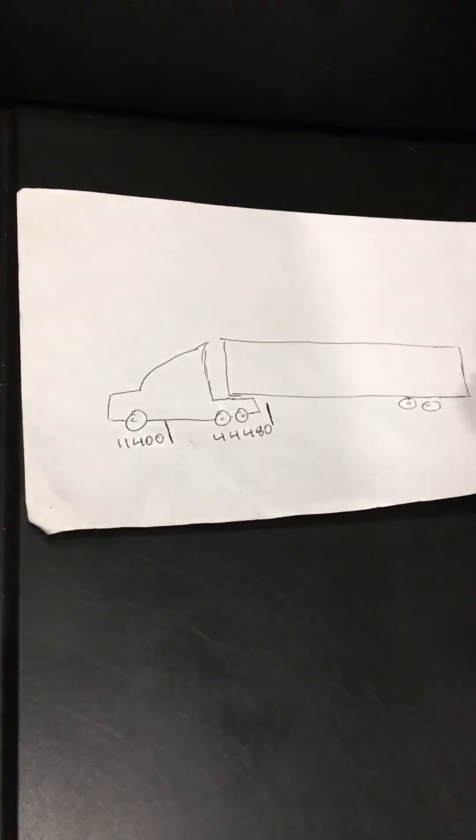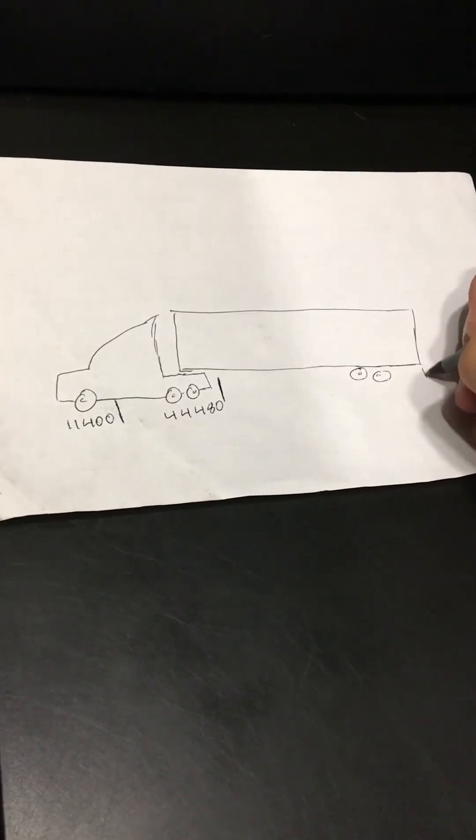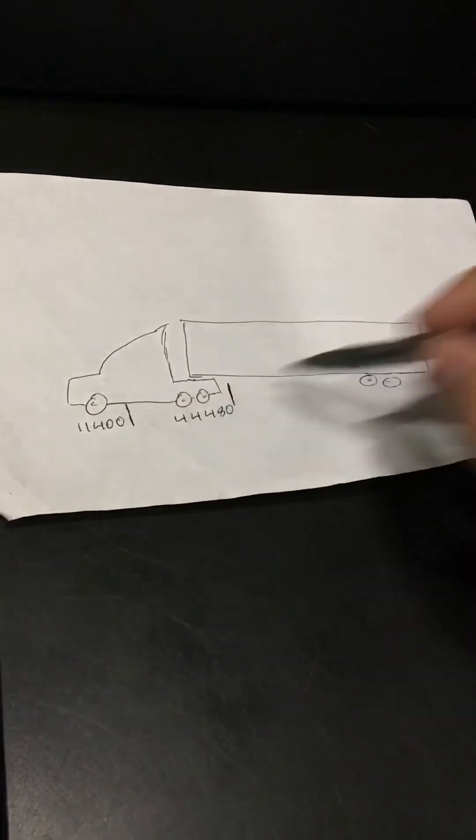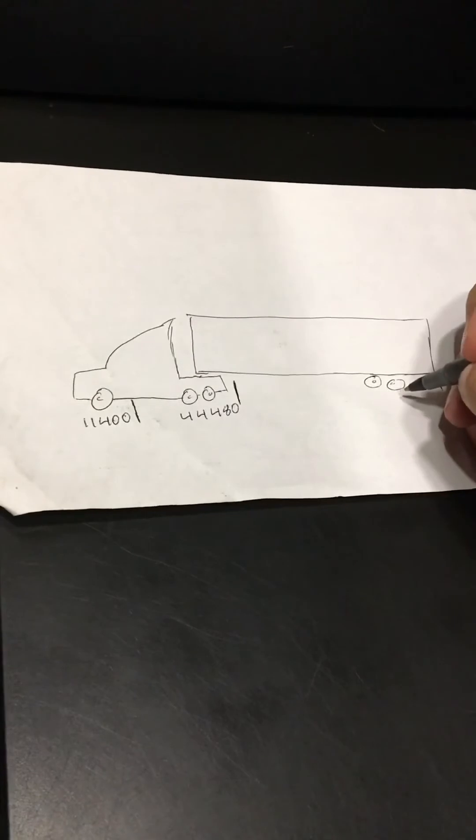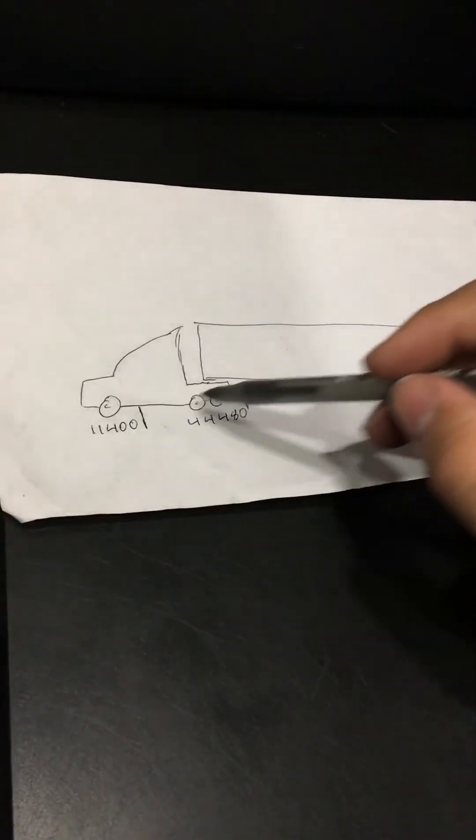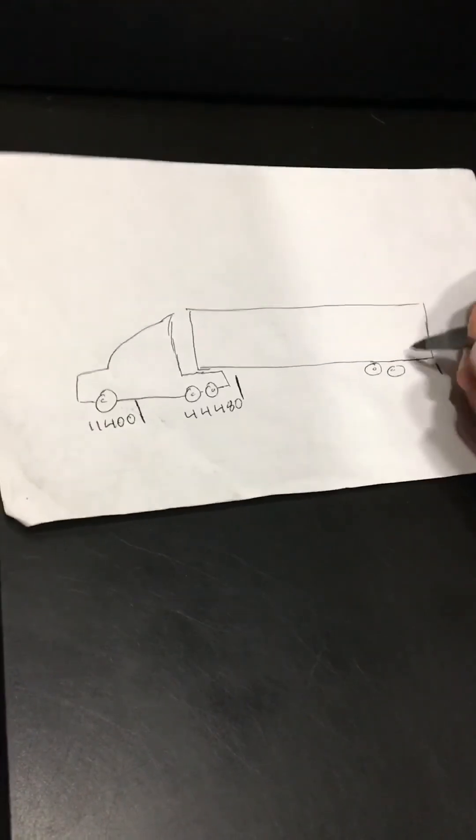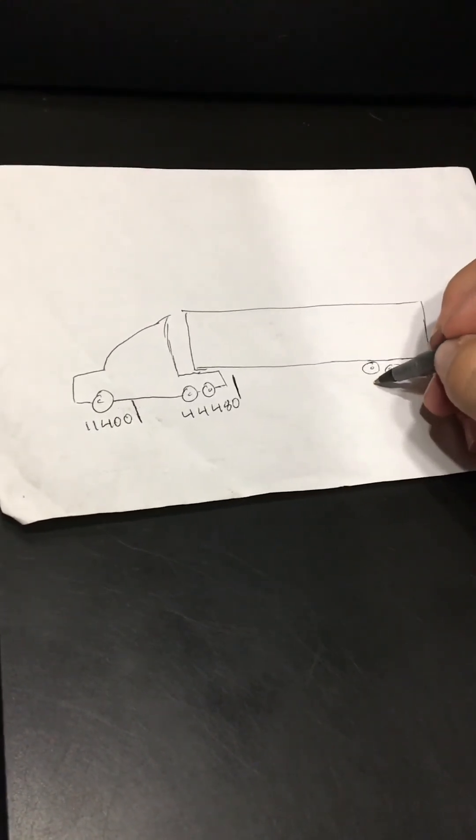So now I have my two numbers. You drive further onto the scale and you get a complete weight. So all three axles are on the scale now. You get a complete weight of 75,920.